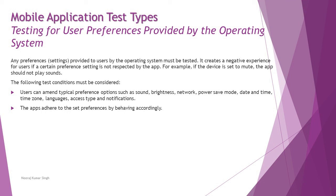For example, regarding time zone — it depends on which time zone you have selected versus which one you are actually in. Most of us keep our time zone set to automatic, so when we travel to a different country our time automatically switches to the local time, and emails and notifications are captured according to the current date and time. The app should be able to adapt to these system settings in order to meet user expectations.